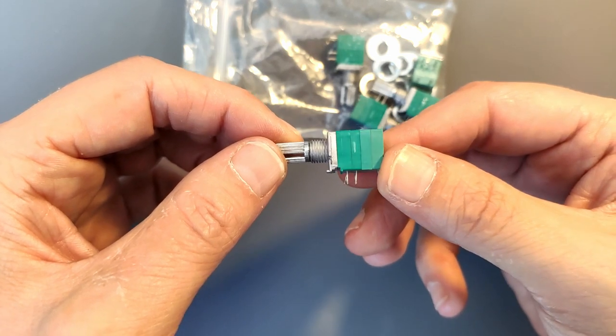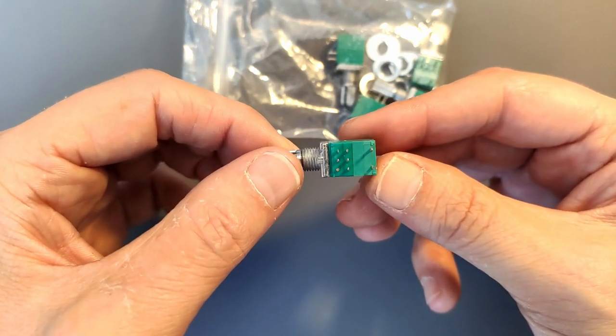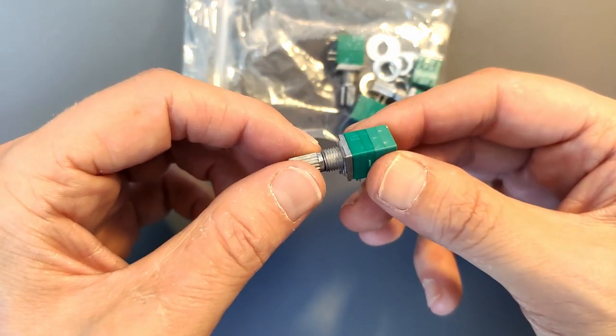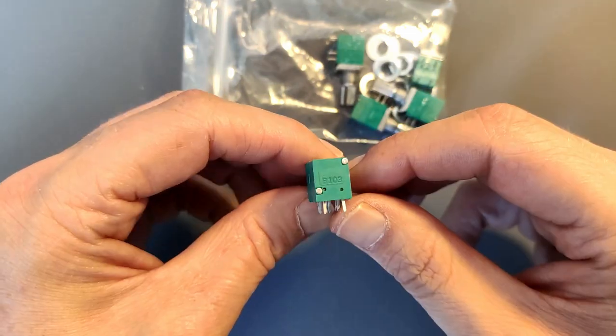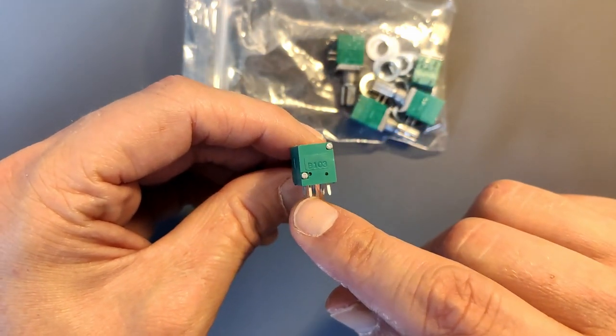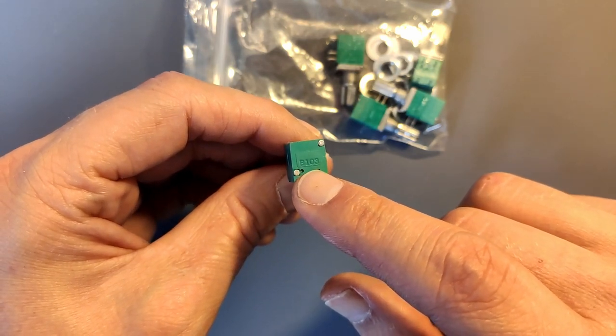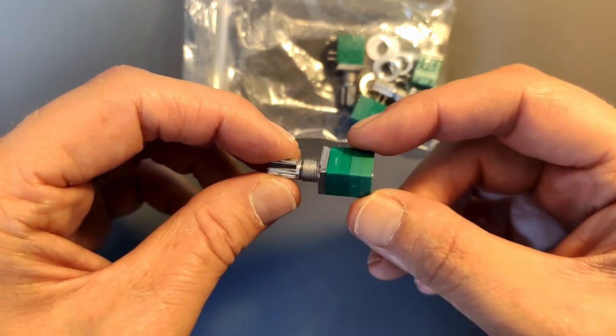And I think the cheaper a kit is, the more fun it is. Because if the quality is kind of the same, I think this will be a good replacement. By the way, the number on here, it's a B taper and it's a 10K pot.